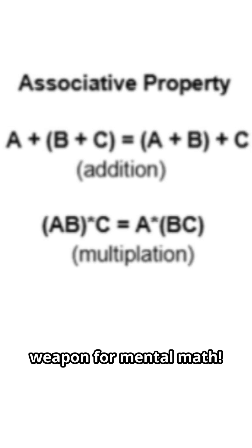This is the secret weapon for mental math. Take 2 times 14 times 5. It might be smarter to multiply 2 times 5 first to get 10.